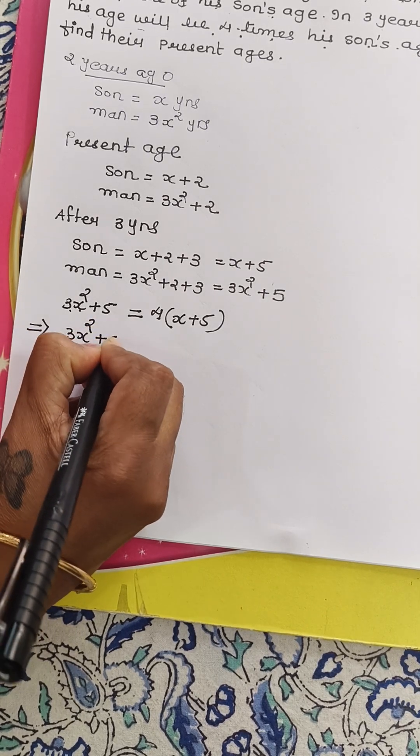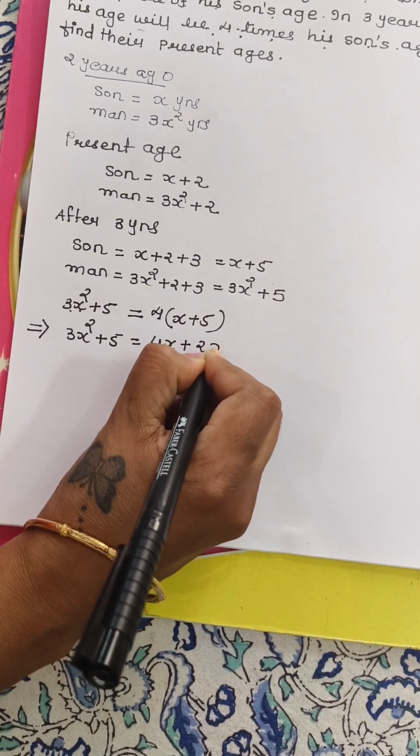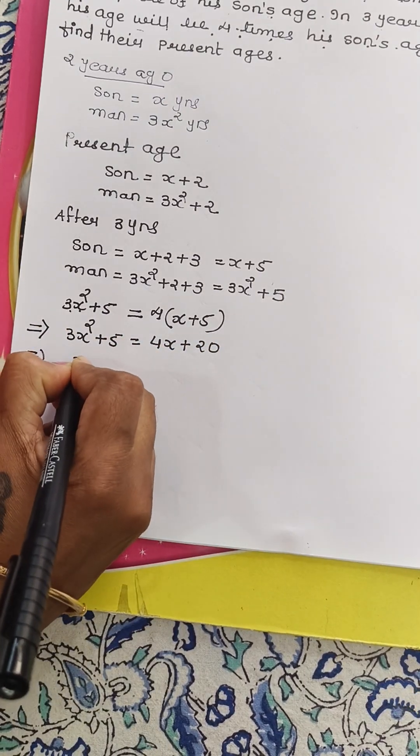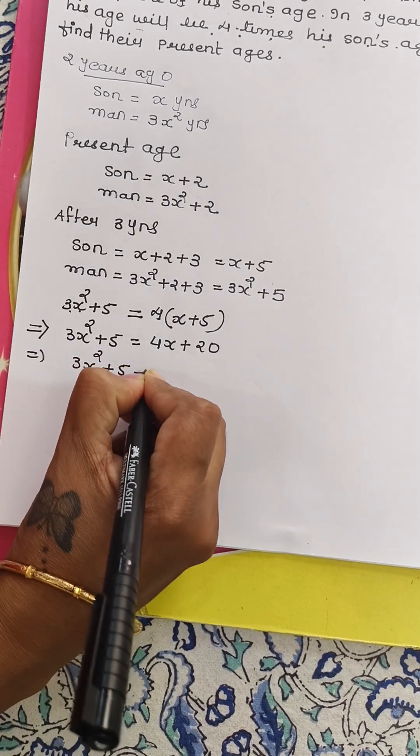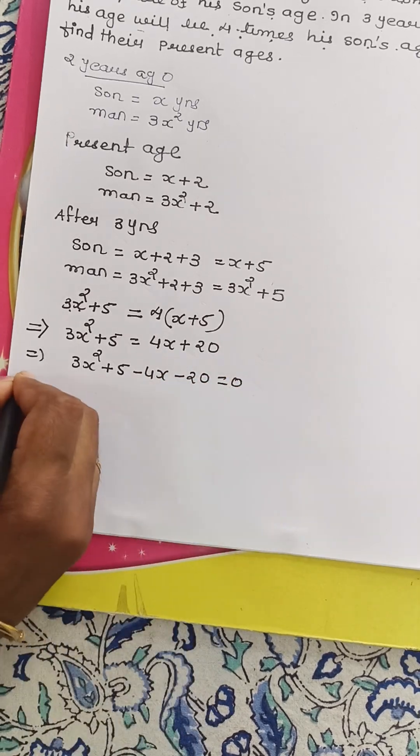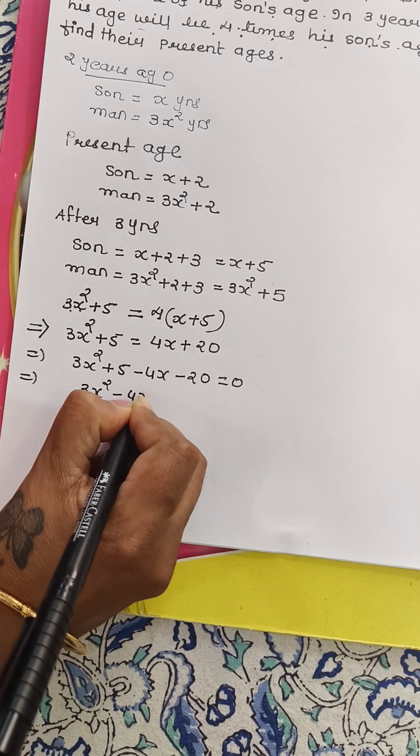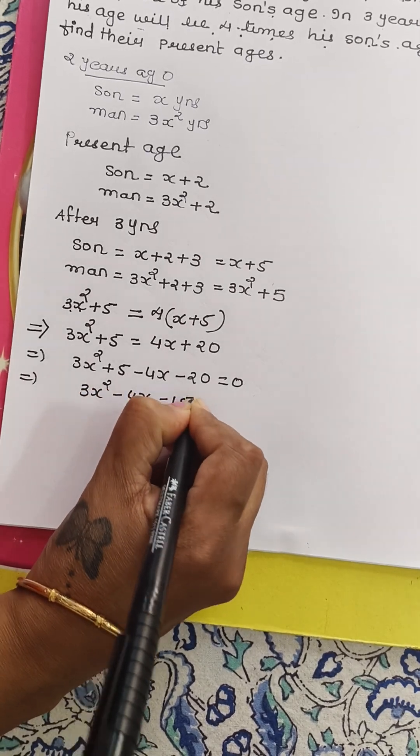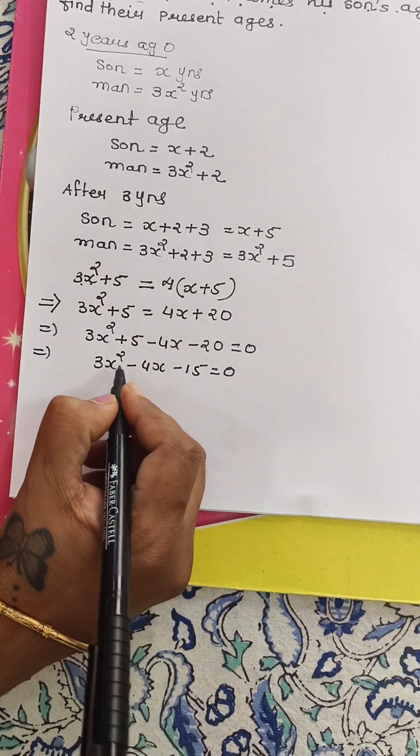Now let's simplify the equation. So 3X square plus 5 is equal to 4X plus 20. That is equal to 3X square plus 5 minus 4X minus 20 equals to 0. 3X square minus 4X minus 15 is equal to 0. So this is now quadratic equation.